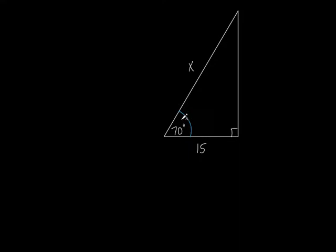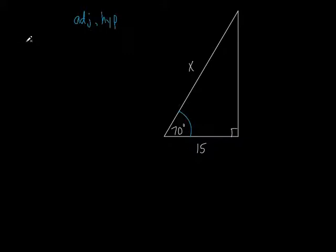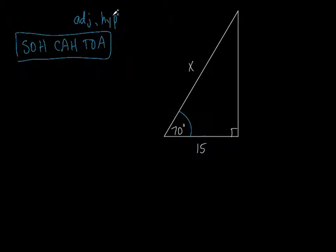Which trig function has adjacent and hypotenuse? Looking at SOHCAHTOA, that's the cosine — CAH, cosine equals adjacent over hypotenuse. So we take the cosine of 70 degrees. You can put this in a calculator — it gives you a decimal number. So: cosine of 70 degrees equals adjacent over hypotenuse, which is 15 over x. Now we do some algebra to solve for x.